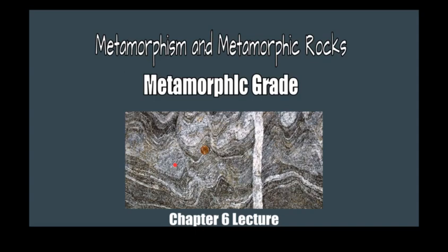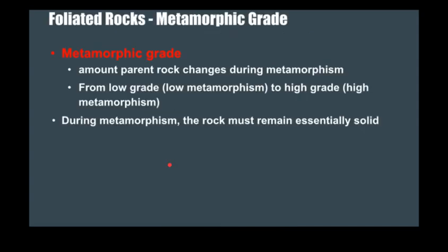Let's look at metamorphic grade, which is the second classification criterion. Once you decide that you have a foliated rock, you can determine its metamorphic grade. This is essentially a measure of how much the rock has changed during metamorphism — from a low-grade metamorphic rock, indicating small amounts of heat and pressure, to a high-grade rock indicating high metamorphism.